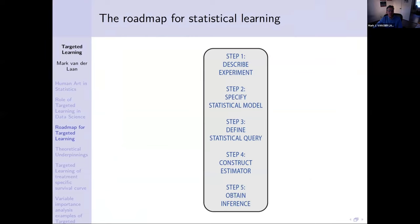Let's talk a little more about this roadmap. The roadmap of statistical learning: step one, describe the experiment; step two, describe a statistical model; step three, describe a statistical estimand; step four, construct an estimator — it's an a priori specified algorithm; step five, how are we going to obtain inference? And there might be a step six, getting into sensitivity analysis.